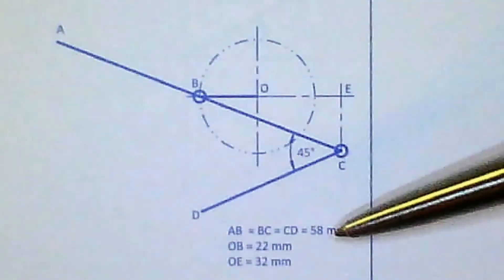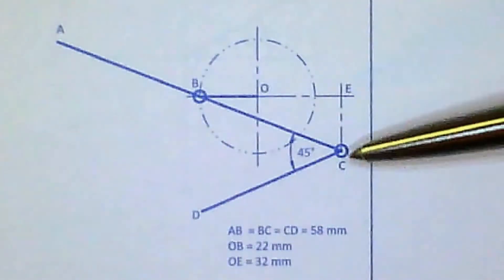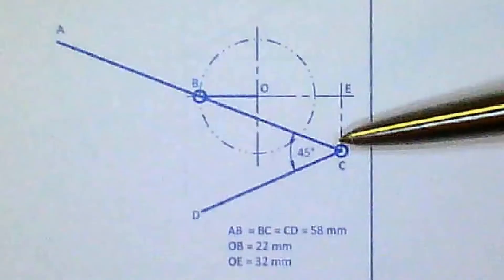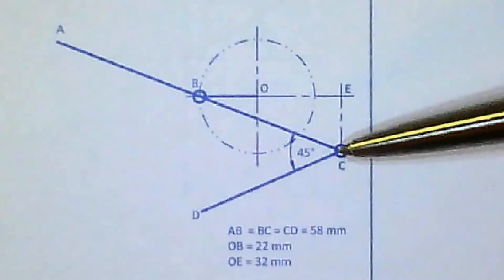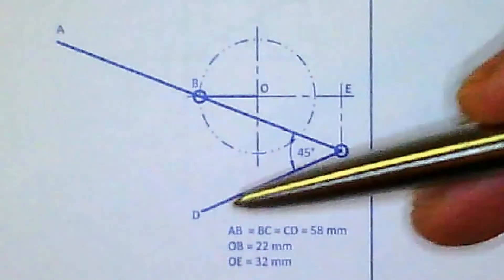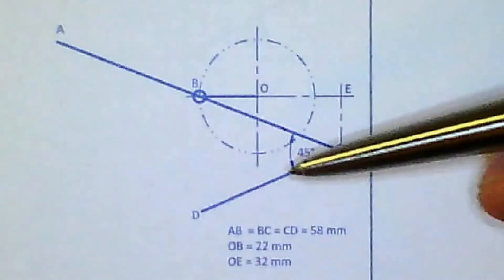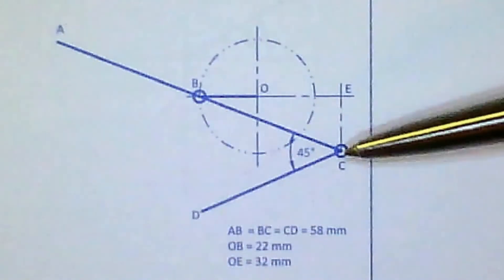So then you draw a construction line down, you set your compass to 58, you put it on B, you swing, and where it collides with this construction line coming down, you can mark it down point C. And then to get the line segment CD, all you have to do is take your protractor, measure 45 degrees, and that will give you that line, and you mark down 58.